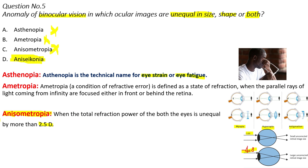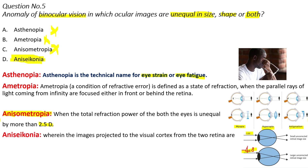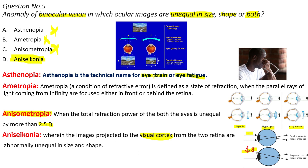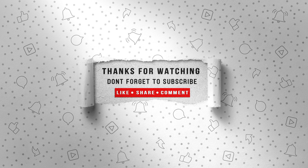Now let's look at Option D: Anisoconia. This is a condition where, when light rays form an image on the retina and those retinal images are projected to the visual cortex, the size and shape of the images formed at the visual cortex are unequal. So that's why Option D is the correct answer. Thank you for watching — stay tuned for more updates. Please don't forget to get your eyes checked yearly, and see the world clearly.